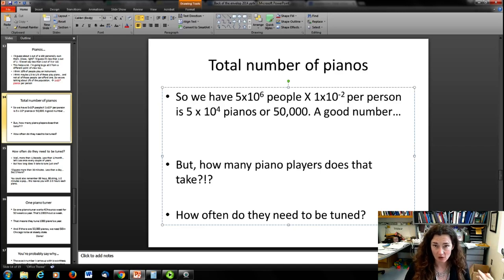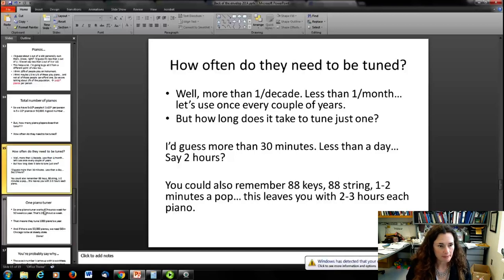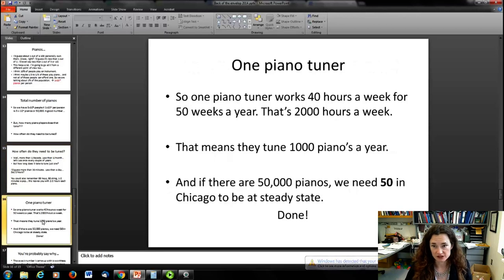How many piano tuners does that take, and how often do pianos need to be tuned? More than once a decade, I would say. If you're a good piano owner, you probably want to have it tuned semi-regularly, but definitely less than once a month. So let's say once every year or once every couple of years. Then how long does it take to tune one? Not 30 minutes—it's not a super fast process—but it probably doesn't take all day either. So let's say a couple hours. You could also come at it another way: there's 88 keys, meaning 88 strings, 1 to 2 minutes per string for tuning—2 to 3 hours. Let's say one piano tuner works 40 hours a week for 50 weeks a year—that's 2,000 hours a year—and they'd tune about 1,000 pianos a year. If there's 50,000 pianos and 1,000 pianos per year, then we need 50 piano tuners in Chicago to be at steady state.